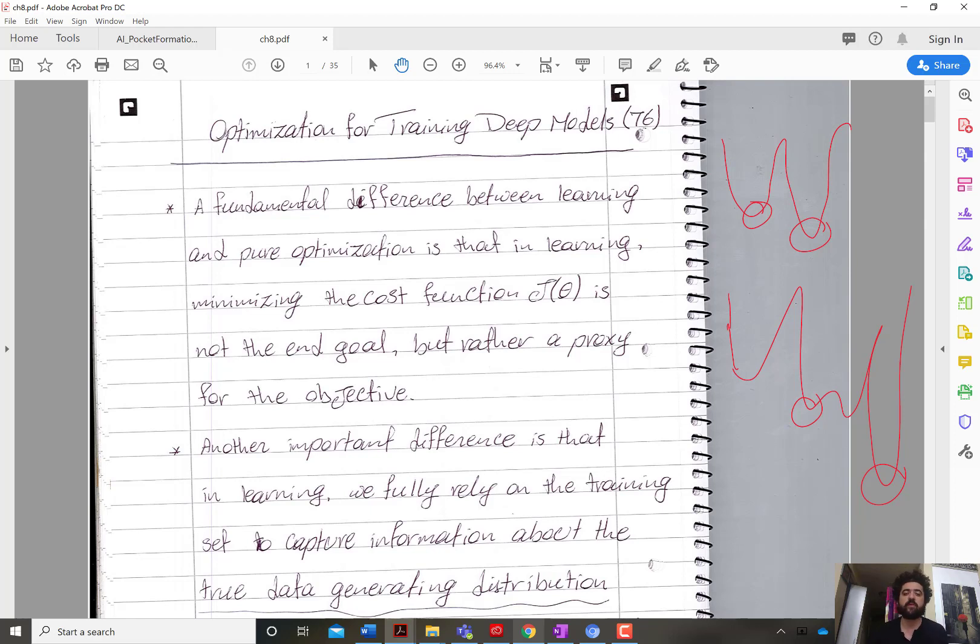So it's not the end goal. What I really care about is the performance, the test performance on data that I've never seen before during training. So the whole training process is a surrogate or a proxy for the real-time performance or the performance on data unseen during training.